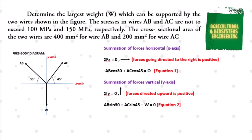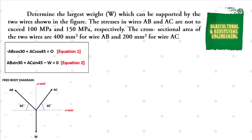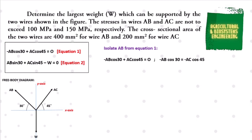After having our equations 1 and 2, we will use these to solve for the weight at AC and AB. We begin with solving the value of weight at AB by isolating AB from equation 1. We transpose AC cosine 45 to the right side: negative AB cosine 30 equals negative AC cosine 45. Multiplying both sides by negative 1 and dividing by cosine 30, we get AB is equal to AC cosine 45 all over cosine 30.